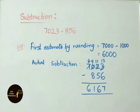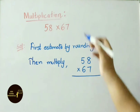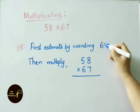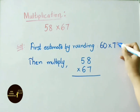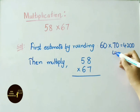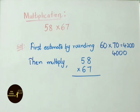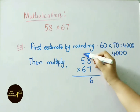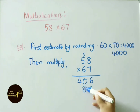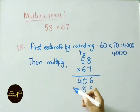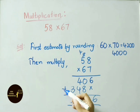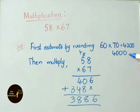Now multiplication sums. Example: 58 into 67. Estimate by rounding: nearest 10 for 58 is 60, nearest 10 for 67 is 70. 60 into 70 is 4,200, which rounds to 4,000. Actual multiplication: 7 eights are 56, carry 5; 7 fives are 35 plus 5 is 40; 6 eights are 48, carry 4; 6 fives are 30 plus 4 is 34. Adding gives actual answer 3,886. Our estimation is 4,000.